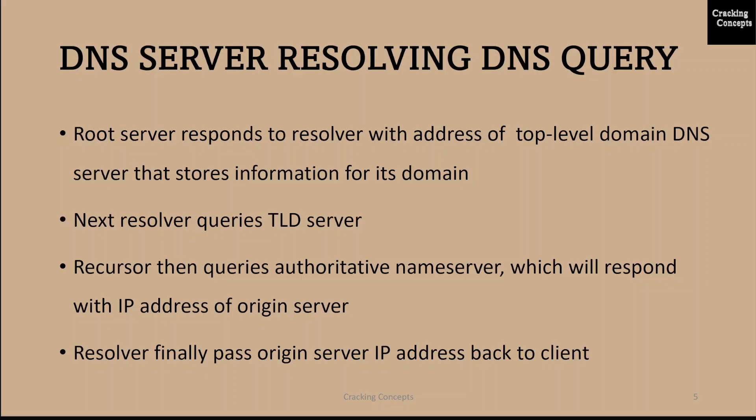Once the resolver receives the request from the client, the resolver then actually behaves as a client itself, querying the other three types of DNS servers in search of the right IP. First, the resolver queries the root name server. The root server is the first step in translating human readable domain names into IP addresses. The root server then responds to the resolver with the address of a top level domain DNS server that stores the information for its domains.